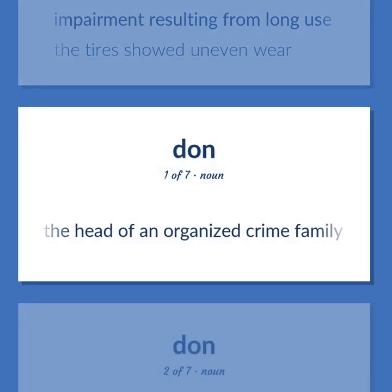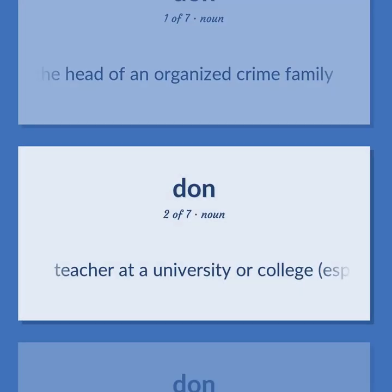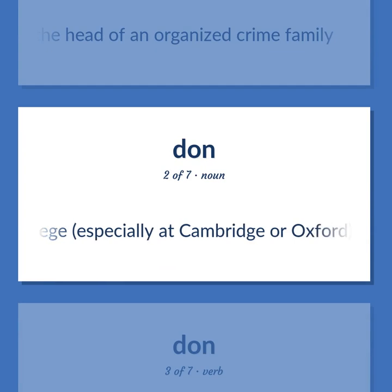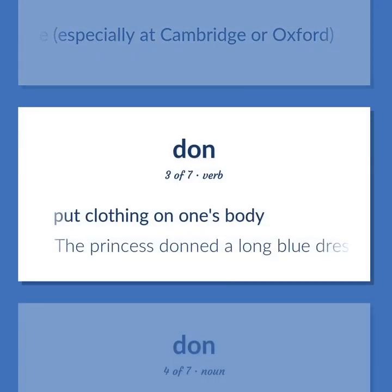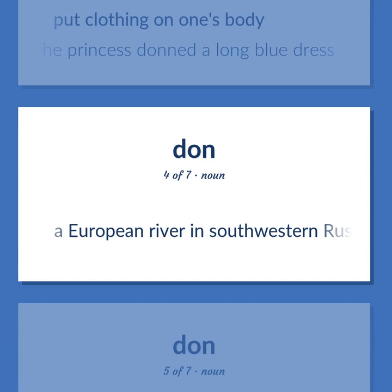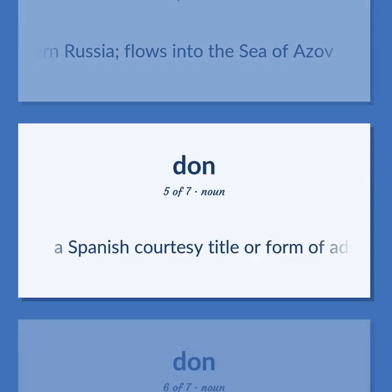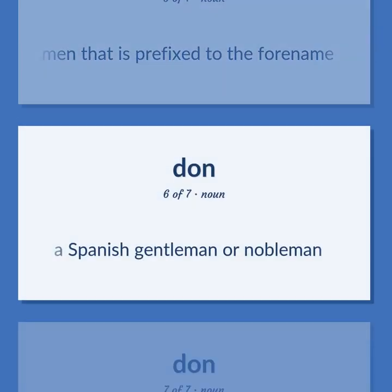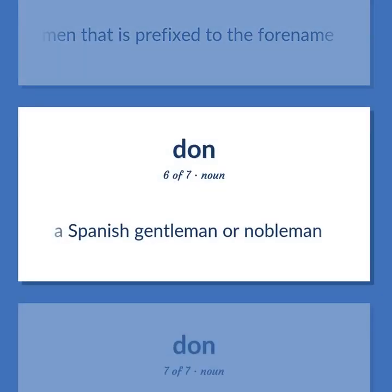Don: the head of an organized crime family. A teacher at a university or college, especially at Cambridge or Oxford. Put clothing on one's body. Example: The princess donned a long blue dress. Don: a European river in southwestern Russia that flows into the Sea of Azov. Also, a Spanish courtesy title or form of address for men, prefixed to the forename; a Spanish gentleman or nobleman.